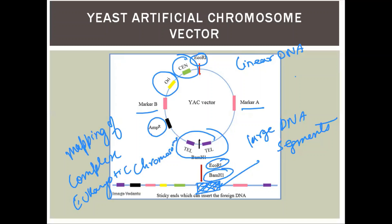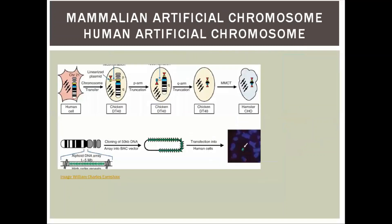Now we are going to study Human Artificial Chromosomes (HAC). These are prepared in the lab through in vitro methods, studying centromeres, telomeres, and origin of replication within transcriptionally active chromosome domains.